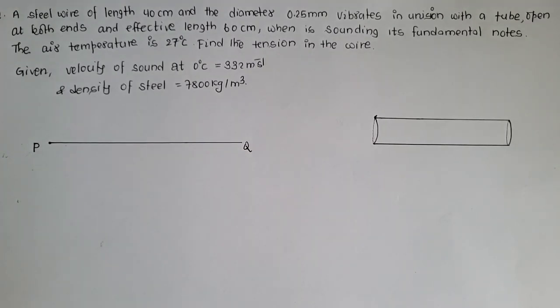A steel wire of length 40 cm and diameter of 0.25 mm vibrates in unison with a tube open at both ends and effective length 60 cm when is sounded its fundamental notes. The air temperature degosa or find the tension in wire vada so degosa.